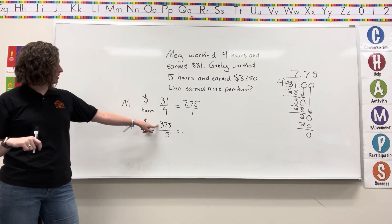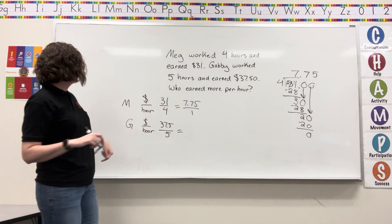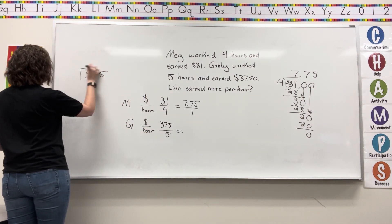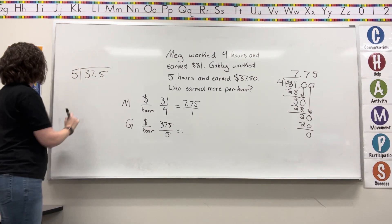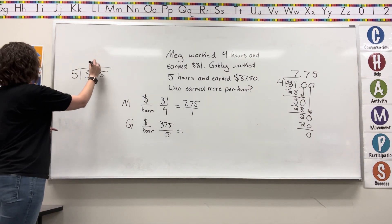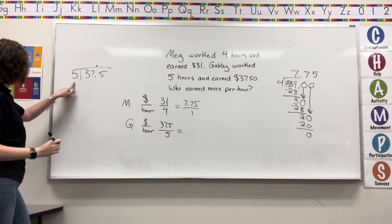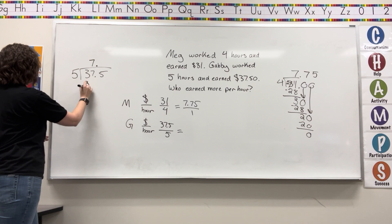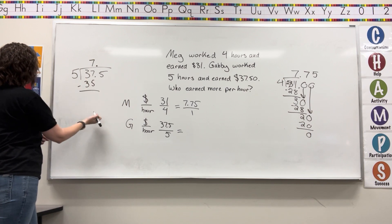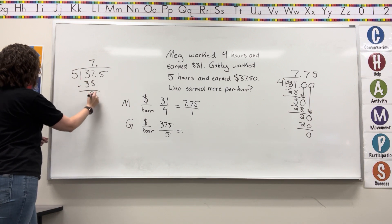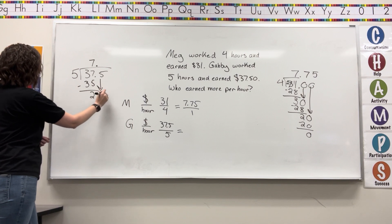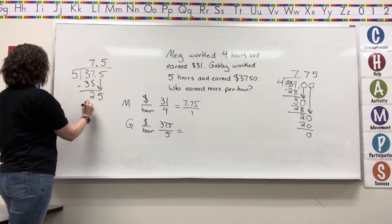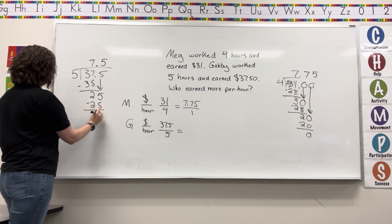We're going to take 37.5 divided by five. Thirty-seven divided by five. Bring your decimal point up. Five goes into thirty-seven seven times. Seven times five is thirty-five. Subtract. We get two. Bring down the five. Five goes into twenty-five five times. Five times five is twenty-five. Subtract and I get zero.